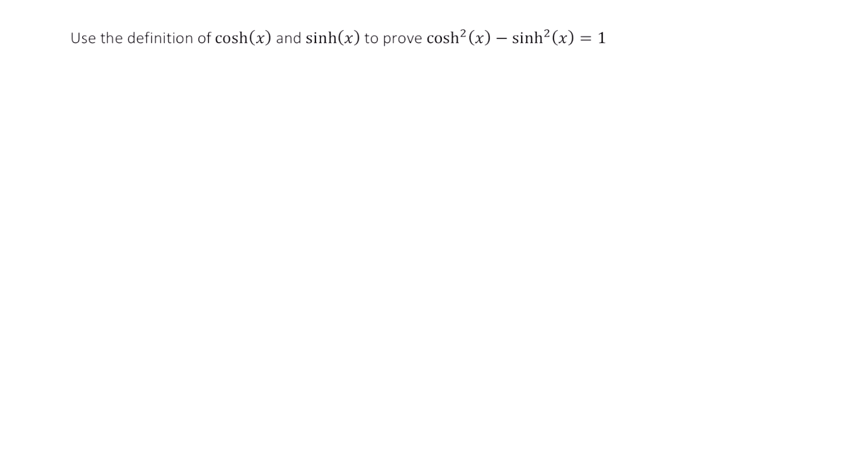Let's begin by actually writing down what these definitions are. Cosh x is equal to e to the x plus e to the negative x divided by 2. Sinh x is really similar. It's e to the x minus e to the negative x divided by 2.